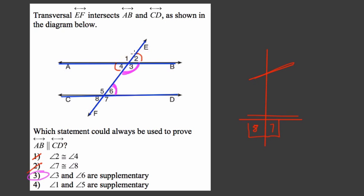The last one, one and five are supplementary. Again, that could be true, but it's not always true. What is always true, for example, is that one and five are congruent. All right, hope this helped. Thank you.